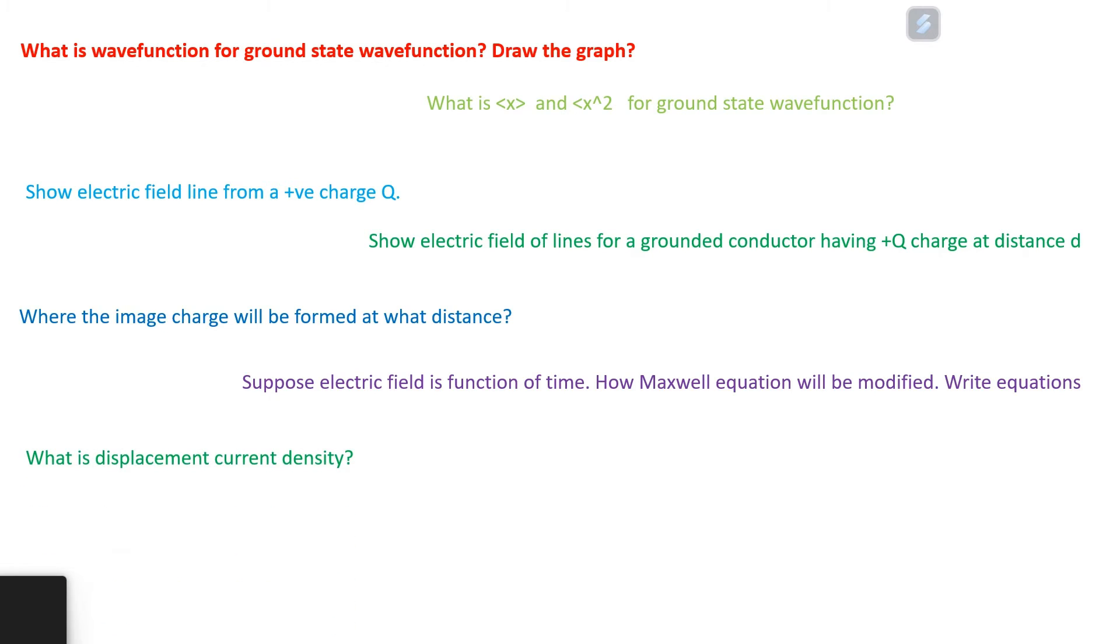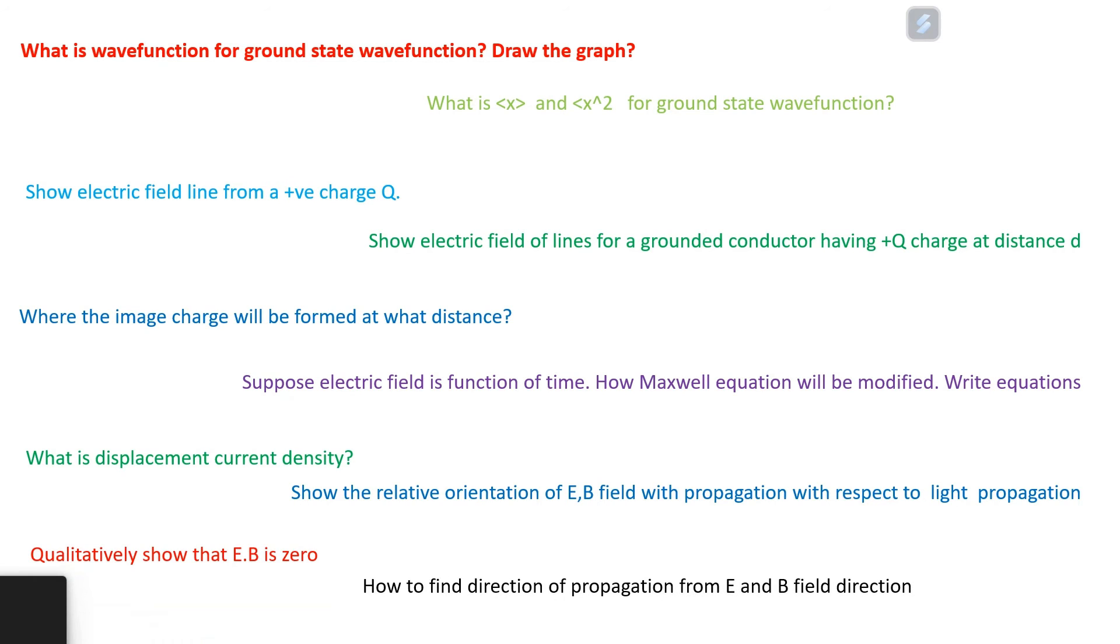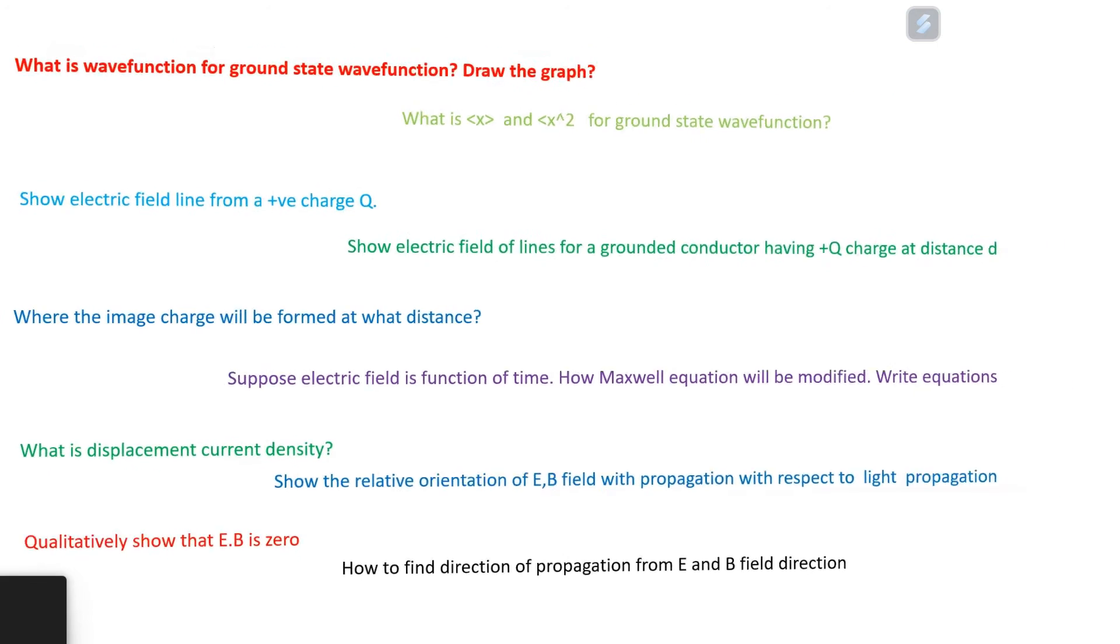What is displacement current density? Show the relative orientation of E and B field with respect to light propagation. Qualitatively show that E dot B is zero. How to find direction of propagation from E and B field direction? If light propagate in z direction, write E and B field wave form with direction.